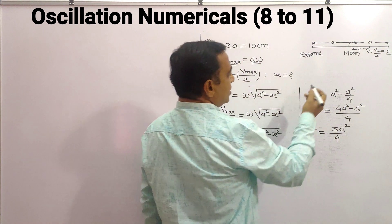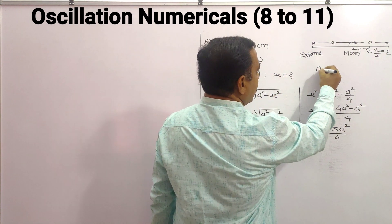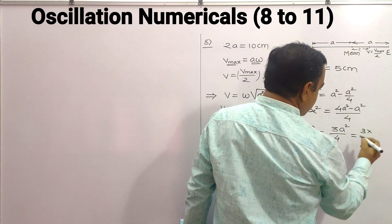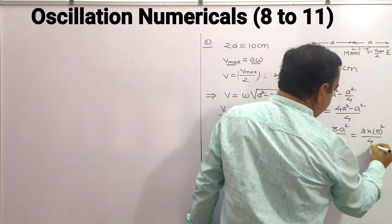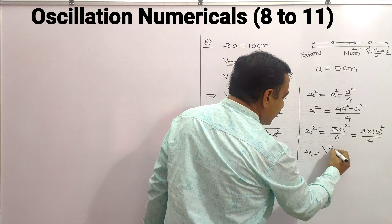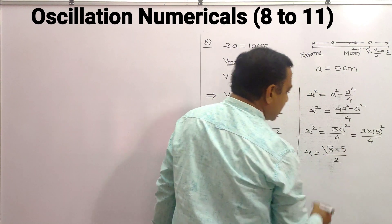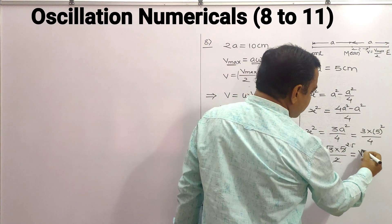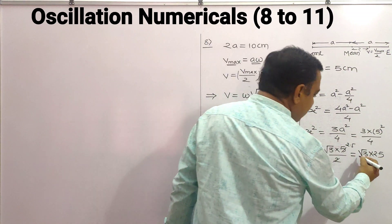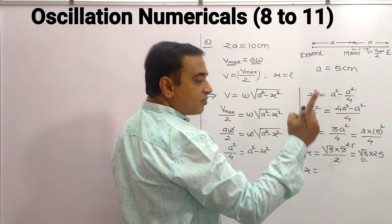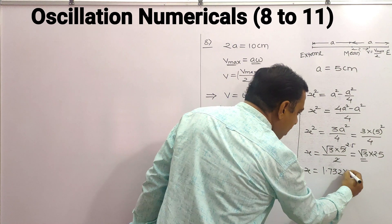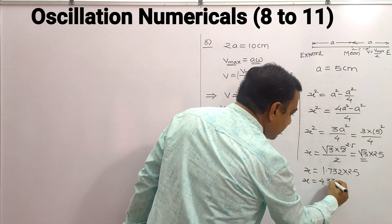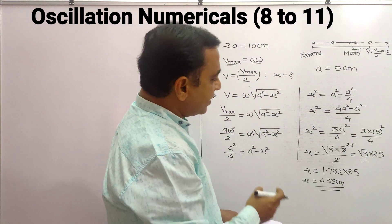Since 2a = 10 centimeter, a = 5 centimeter. Substituting: x² = 3 × 5² / 4 = 75/4. Taking the square root: x = (√3 × 5)/2 = √3 × 2.5. Since √3 = 1.732, multiplying by 2.5 gives x = 4.33 centimeter. That is the answer.